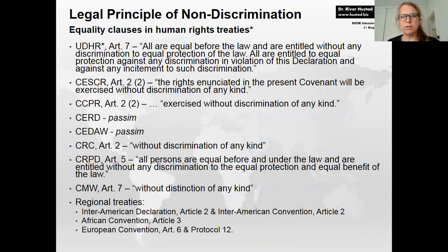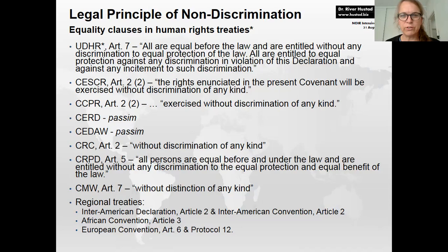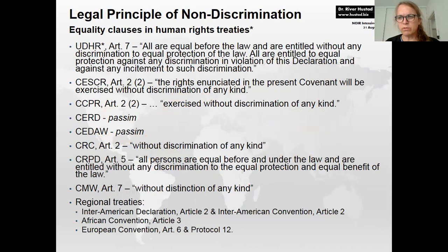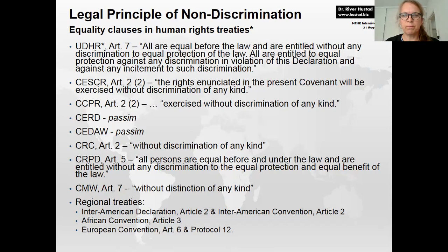There are equality clauses in all of the human rights treaties — with the caveat that the UDHR is not a treaty but a General Assembly resolution. All of the human rights treaties state that the implementation of each right must be done without distinction or discrimination of any kind, and regional treaties have similar clauses. But we are still not getting to a real definition of what non-discrimination is. These equality clauses are largely stating the nature of state obligations: when states act, they must act without discrimination.